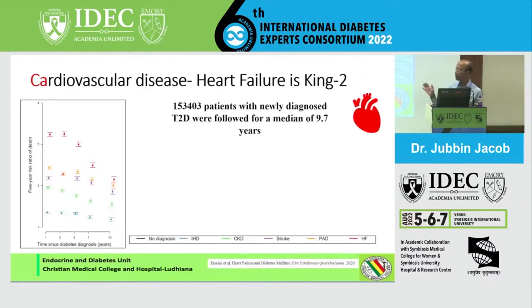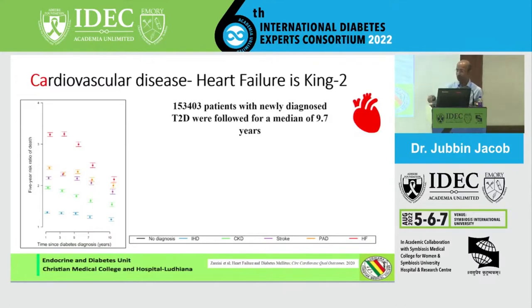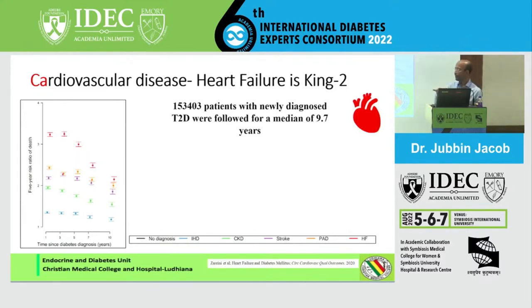The second reason why heart failure is king is mortality data. We have done very well with MI — we have statins, stents, and lots of antiplatelet agents. The blue lines here show what the MI death rates are. Look at what the heart failure death rate is — right on the top, along with peripheral vascular disease. This is about 1.5 million patients, and this is one area where we have not done very well. Heart failure at any year shows the highest five-year absolute and relative risk of death. That is why heart failure is king, much more than strokes and myocardial infarctions.